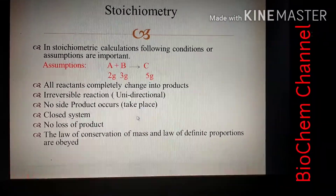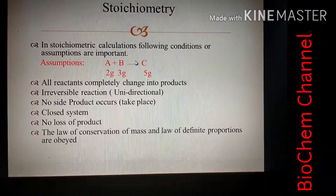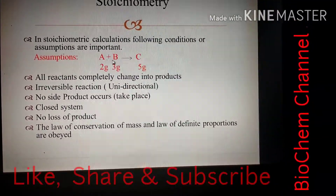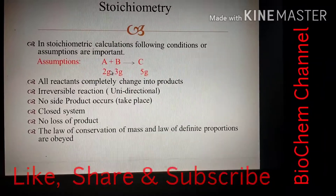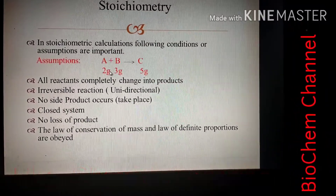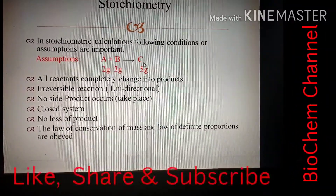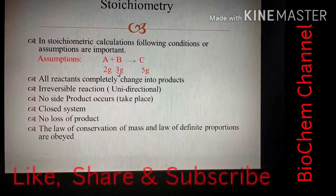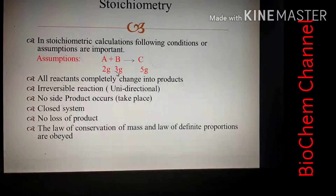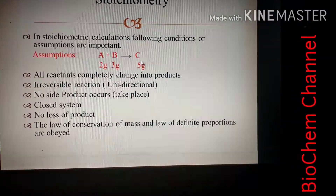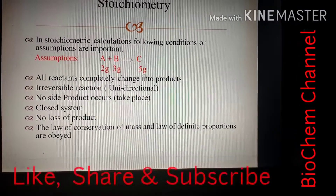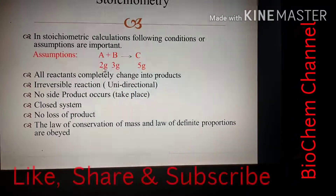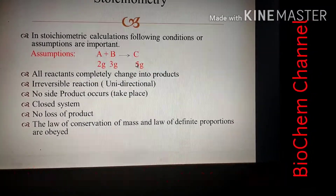In stoichiometric calculations, the following assumptions are important. For example, if reaction A plus B gives product C, and we have 2 grams of A and 3 grams of B, the total amount of reactants — 5 grams — should be completely converted into 5 grams of product.